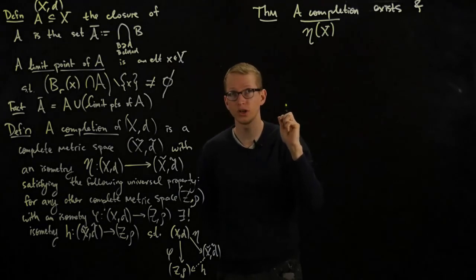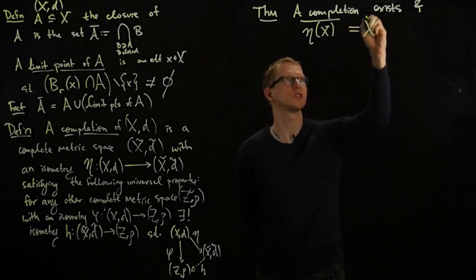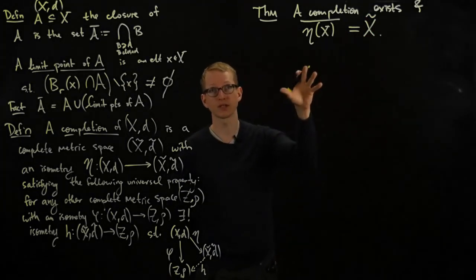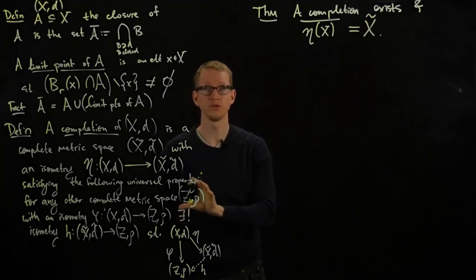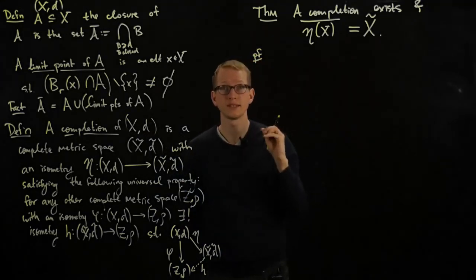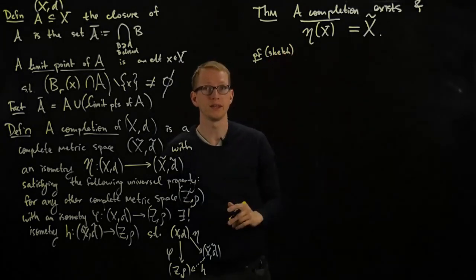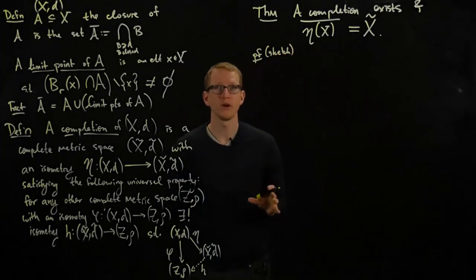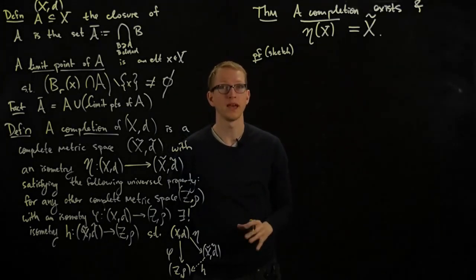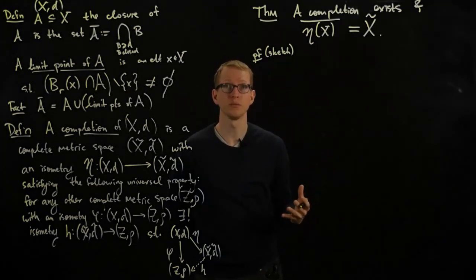so I take the closure of x inside of x tilde, it actually equals x tilde. So this is actually a consequence of this universal property. So let's give a sketch of the proof. And the sketch is going to essentially outline what you need to prove to verify these claims. And you'll see that there's actually a lot involved, which is why the actual proof of this theorem is quite long.